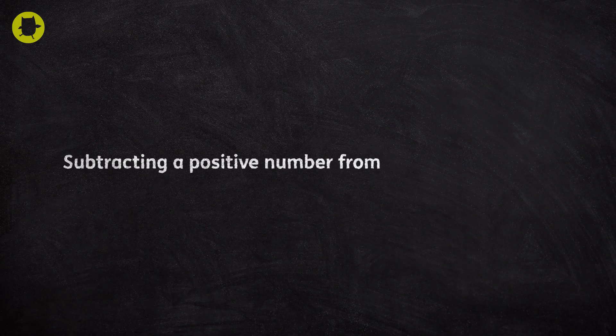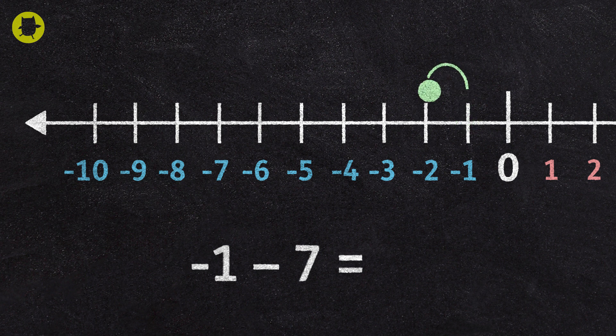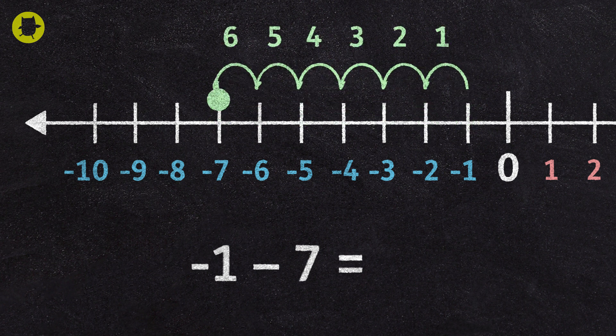To subtract a positive number from a negative number, we count back the value of the positive number. So to find out negative one subtract seven, we mark negative one on the number line. To subtract seven, we move seven places in the negative direction, to the left of the number line. Negative one subtract seven is negative eight.